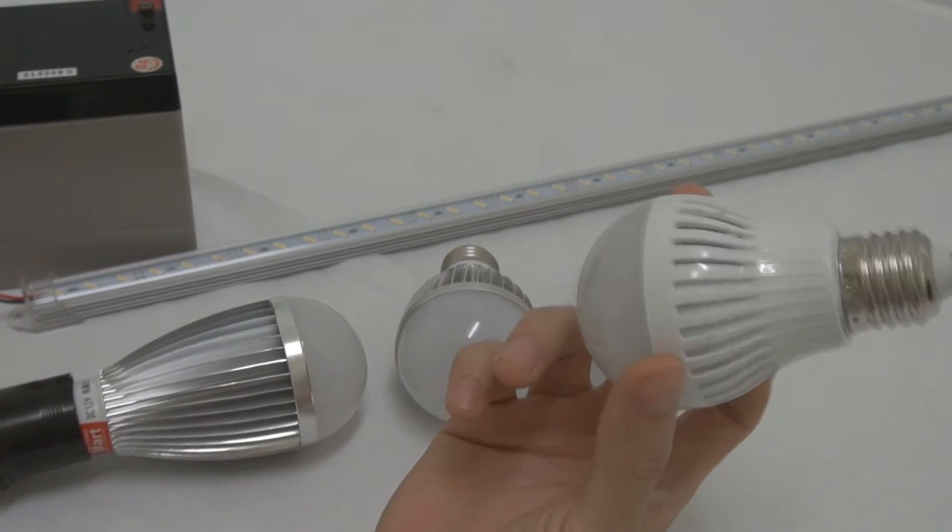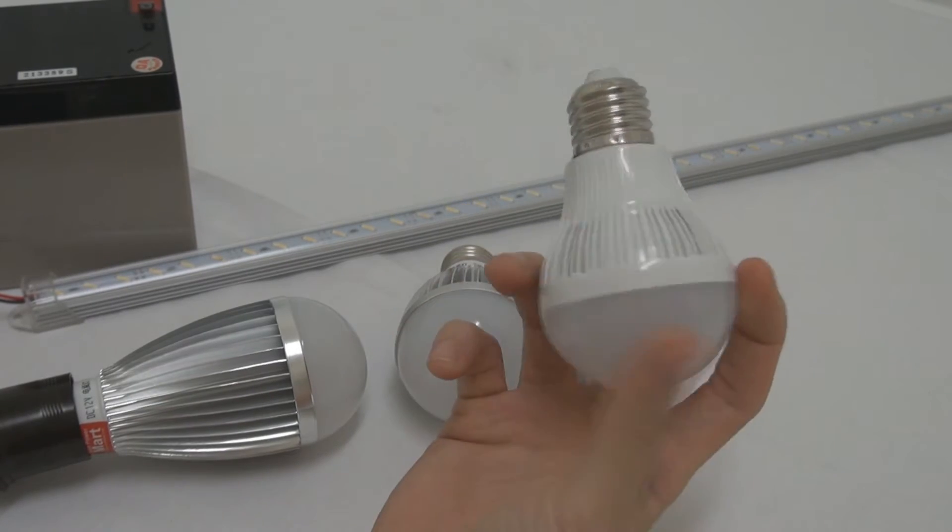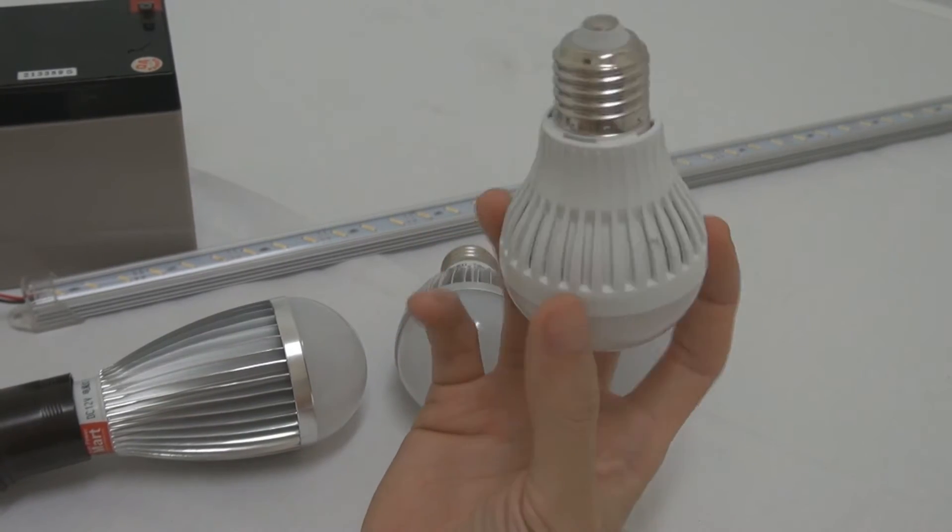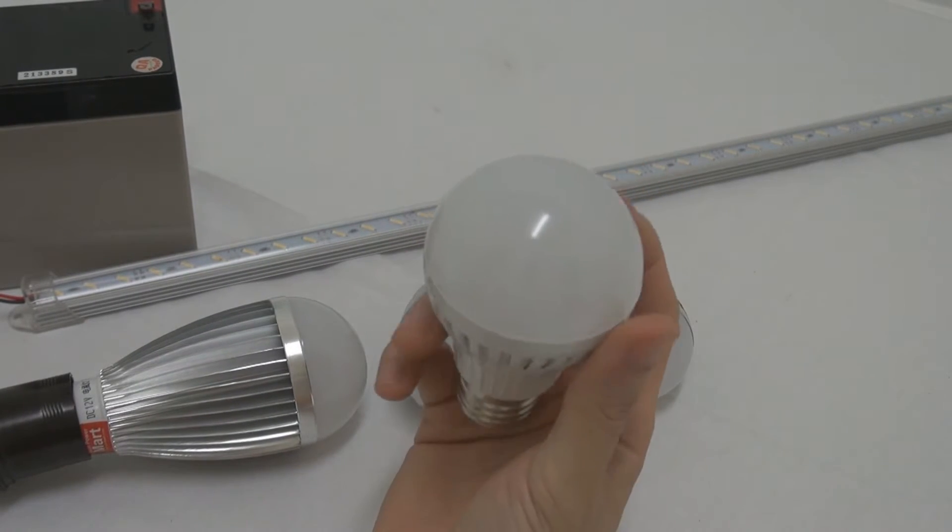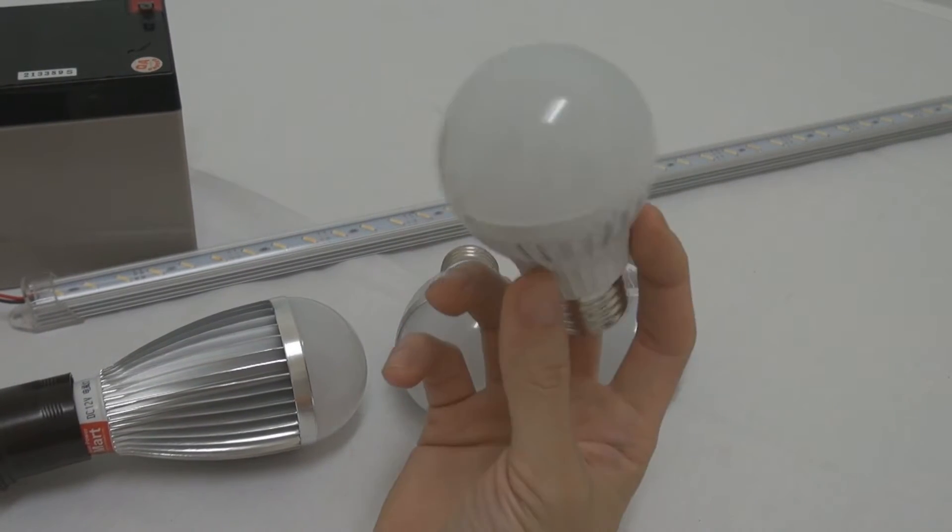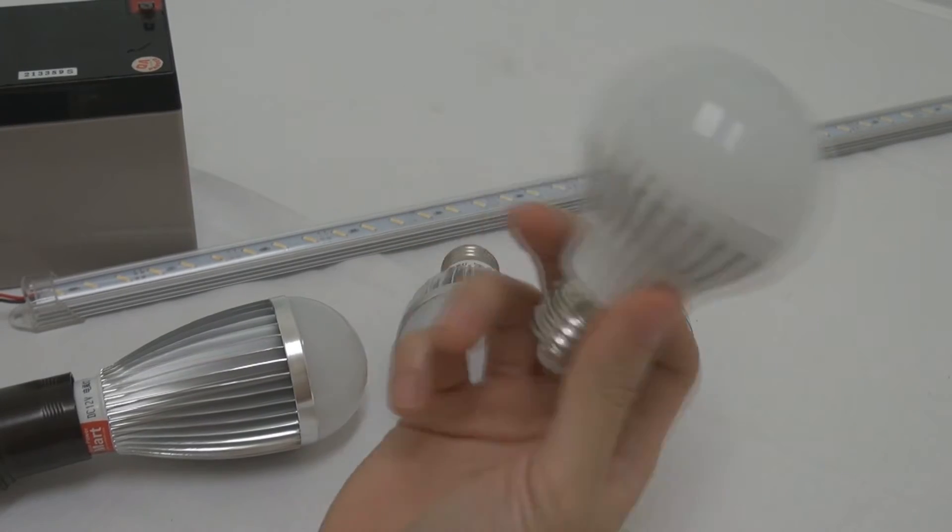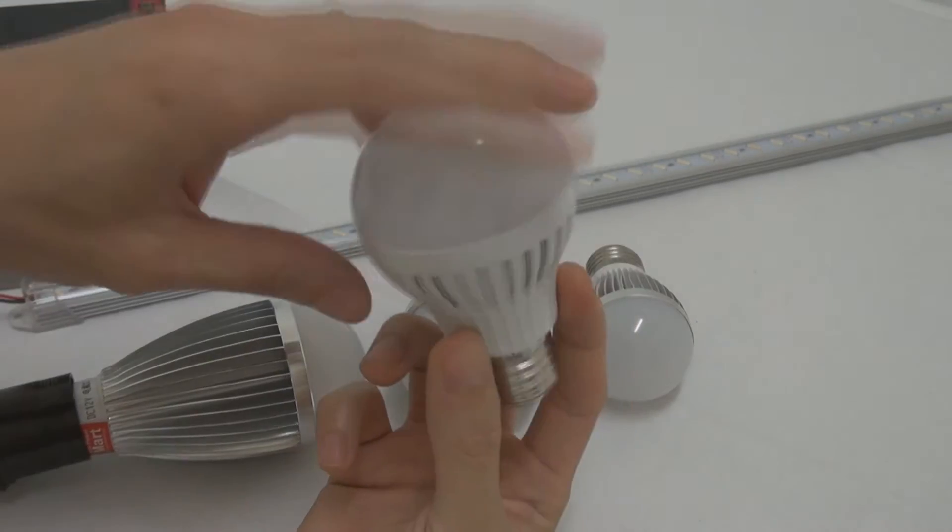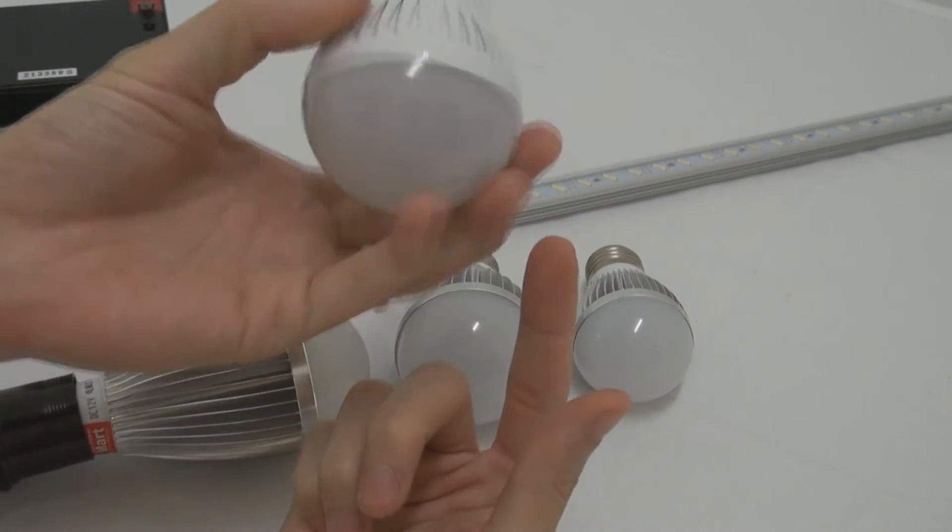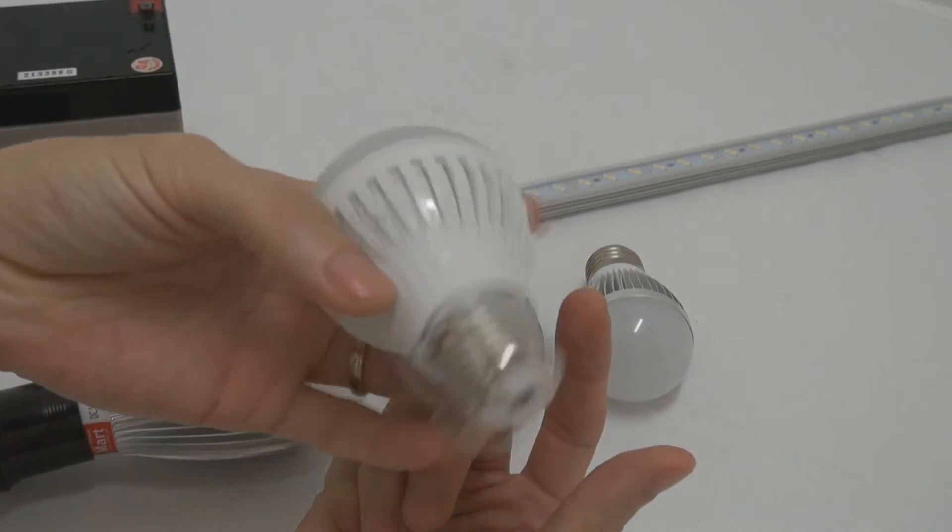So you can use this light bulb, plug it in, you don't even need a converter to convert down to 12V. It takes both voltages, either 12V or 24V. It's a frosted design, E27, roughly gives you about 300 lumens.